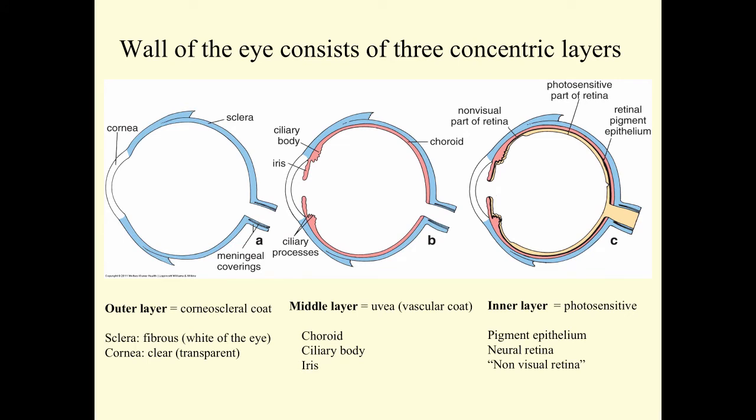There's an outer layer, a middle layer, and an inner layer. The outer layer is sometimes called the corneoscleral coat. The middle layer, called the uvea, is essentially a vascular coat, and the inner layer is a photosensitive coat. We're going to talk about each of these in detail as we go through these podcasts.